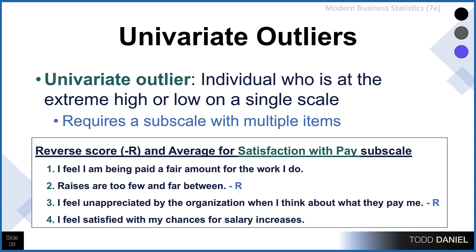For example, I have a Satisfaction with Pay subscale which includes an item about being paid a fair amount, an item about raises being too few and far between, feeling unappreciated because of what you're being paid, and feeling satisfied with your chances for salary increases. We would reverse score the second and third items — changing a one to a six and a six to a one — and then average those four items into a single Satisfaction with Pay subscale. For the aggregate of these four items, we could have someone who scores particularly high or particularly low on that scale, and that could be a univariate outlier.